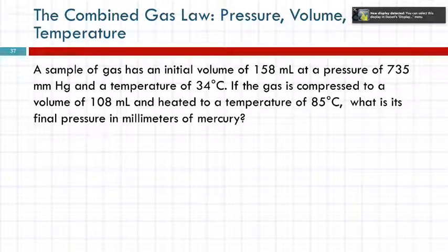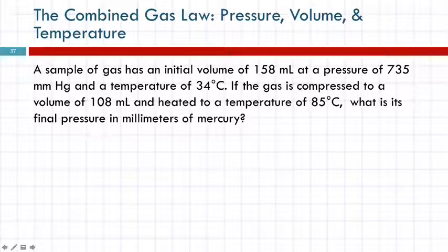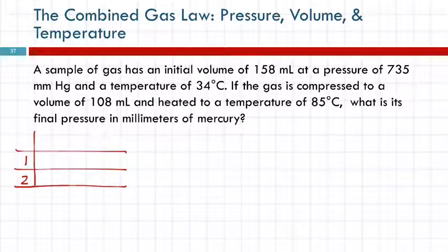So we'll make our table. We're going to have condition 1, condition 2. So the first number we come to, 158 milliliters. It says volume of, but the unit also tells us that's a volume. 158 milliliters at this pressure, those go together, so we want those on the same line, 735 millimeters of mercury.